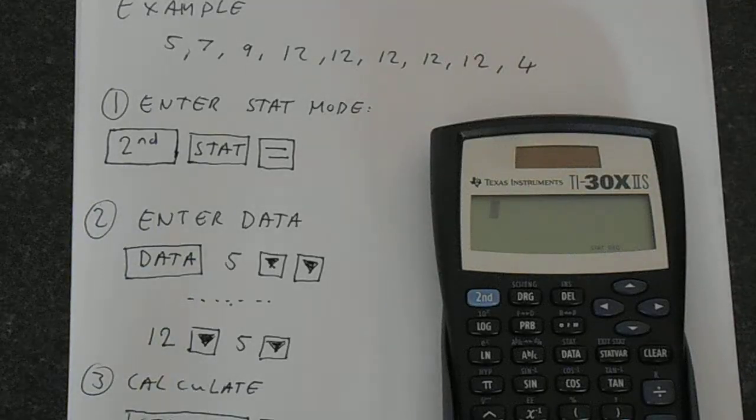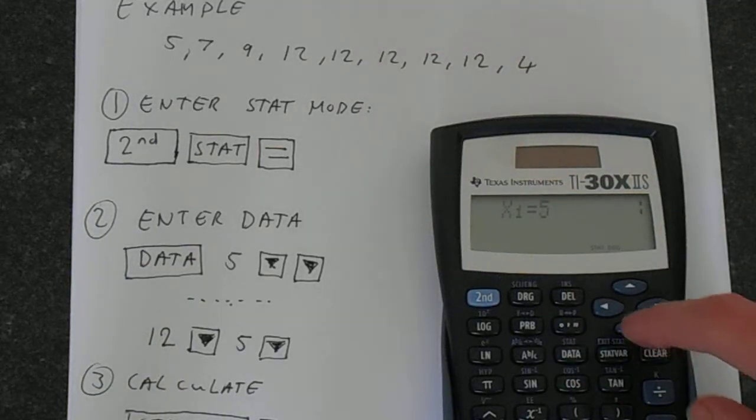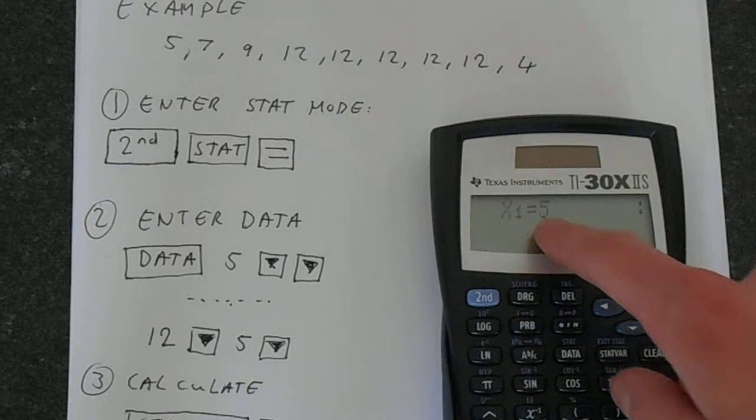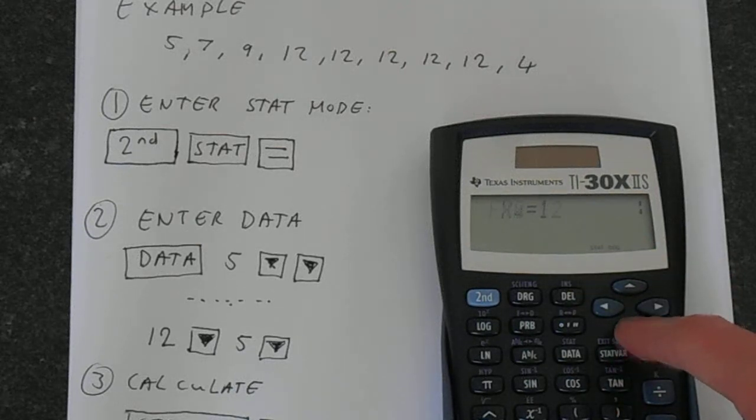Now we can enter our data. Unsurprisingly, you just press the data key. I've already entered the data in here. We've got five, press down twice, seven, down twice, nine, down twice.